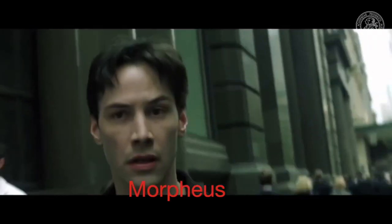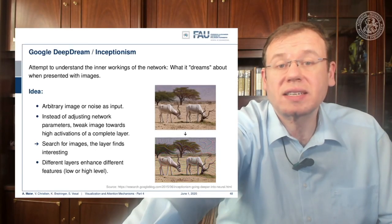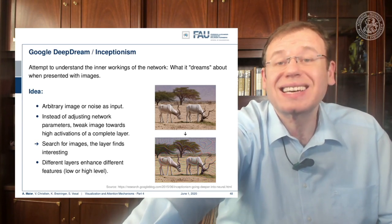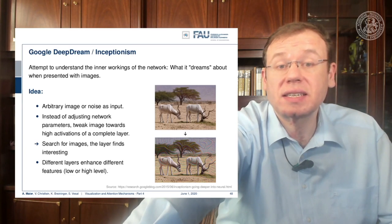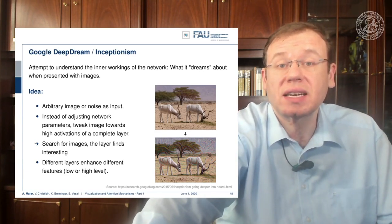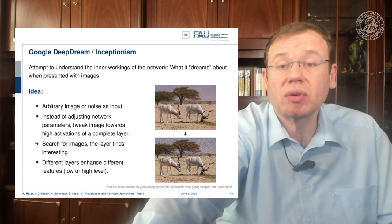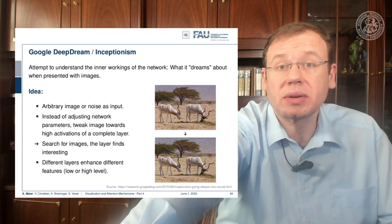The original idea was layer visualization. You try to understand the inner workings of networks by examining what they produce when presented with images. You start with an image or even noise as input, then you adjust the image towards maximizing activations in a complete layer. For different layers it highlights different things in the image. If you activate mostly early layers, the image content is not much changed but you create those brush-stroke-like appearances.